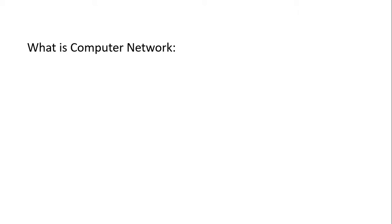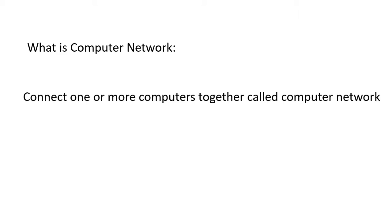The main thing is: what is a computer network? Everyone has a different kind of explanation. The basic meaning is connecting one or more computers together — that is called a computer network. You need at least one or two computers or devices to have a network. It's similar to human communication: if you are two people or a group talking together, that is a network. Computers work the same way.